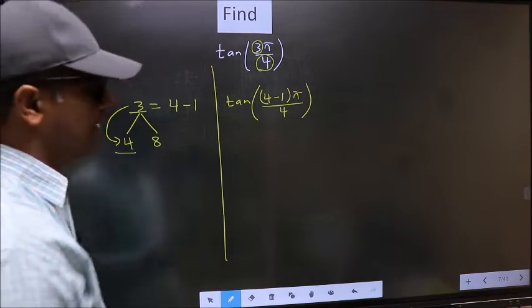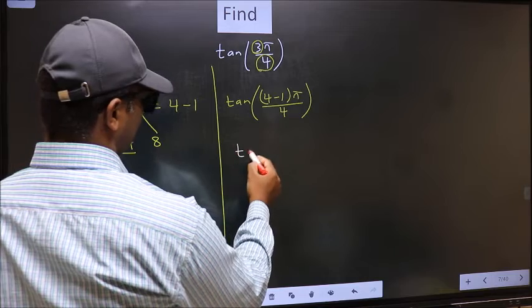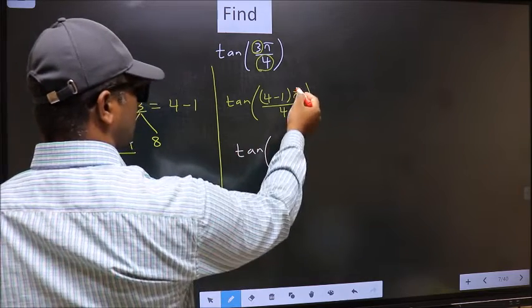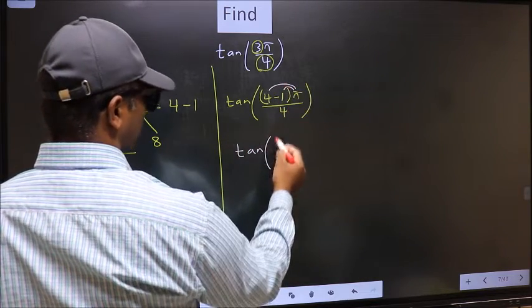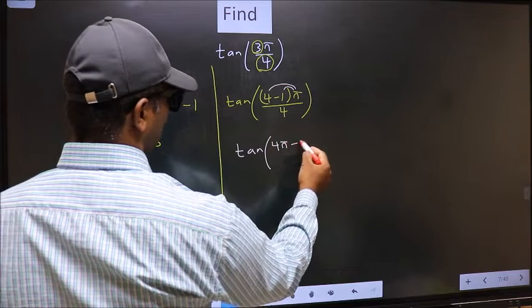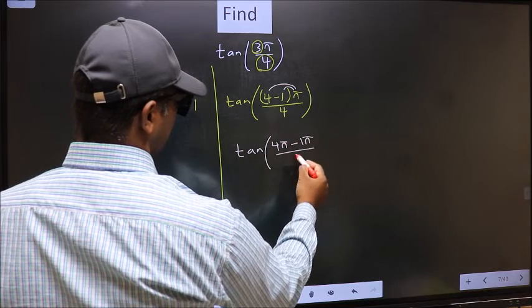Next, tan. Now you should open the brackets. You get 4π minus 1π by 4.